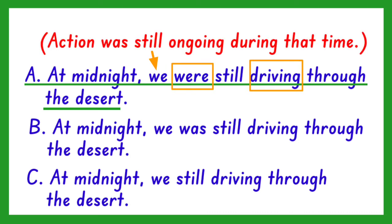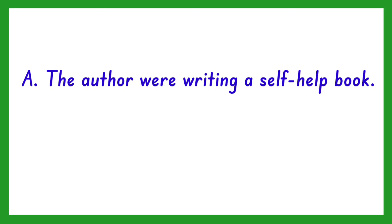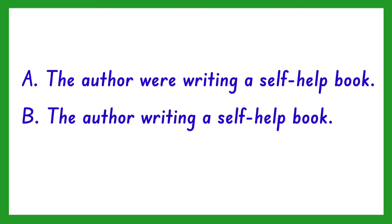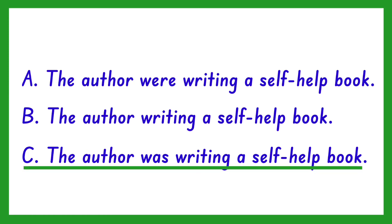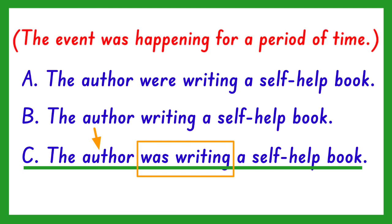By the way, this sentence tells that the action was happening at the precise time in the past. Another one. A: The author were writing a self-help book. B: The author writing a self-help book. C: The author was writing a self-help book. The correct sentence is C, because the subject is singular — author — so was should be used. This tells that an event was happening at some time or for a period of time in the past.